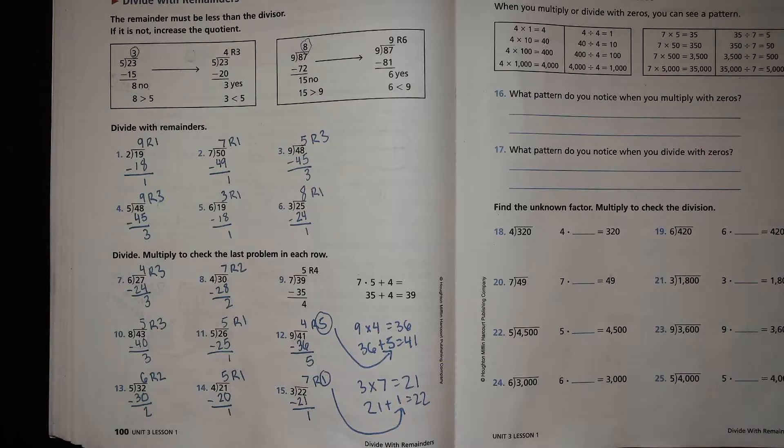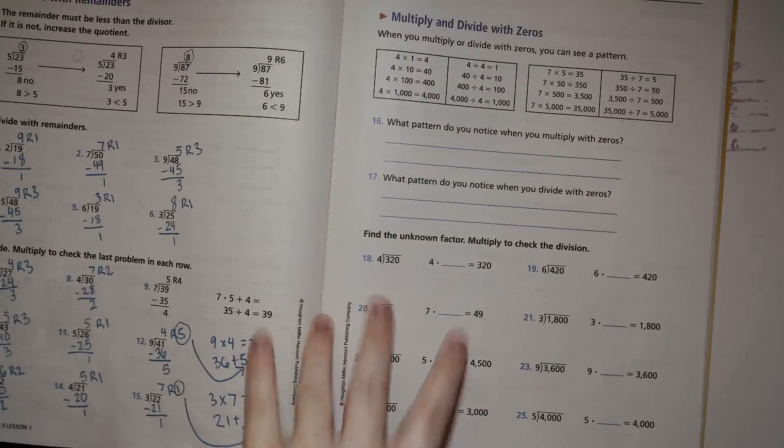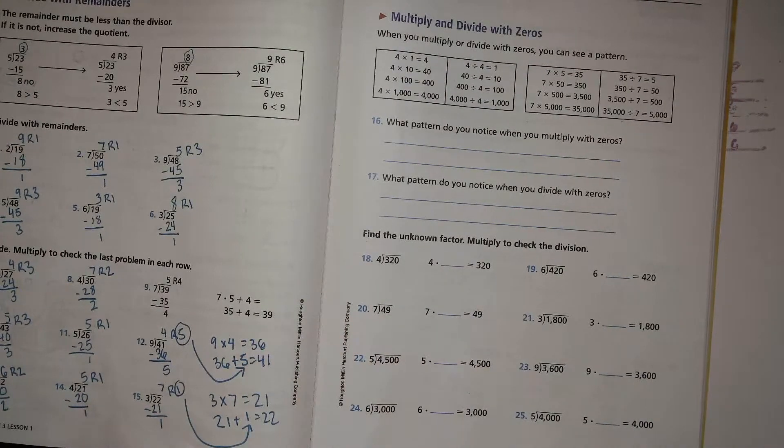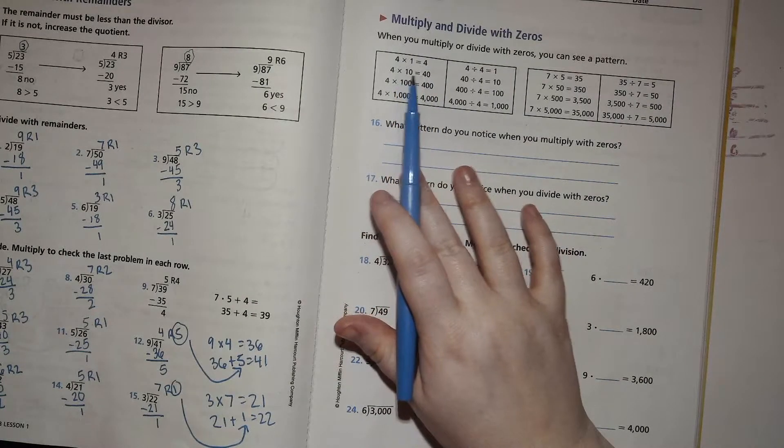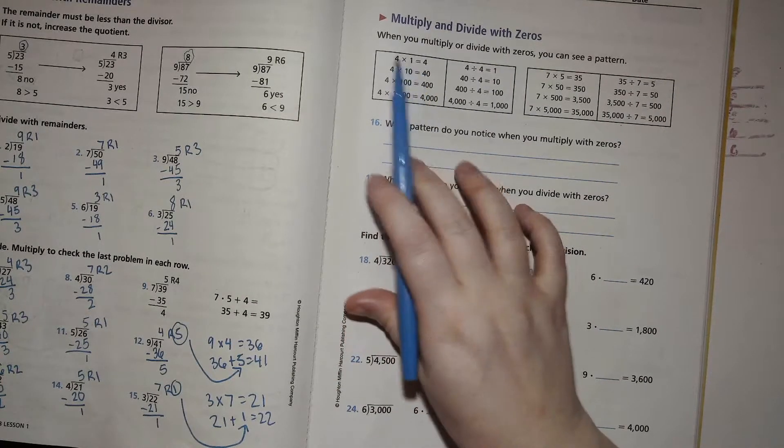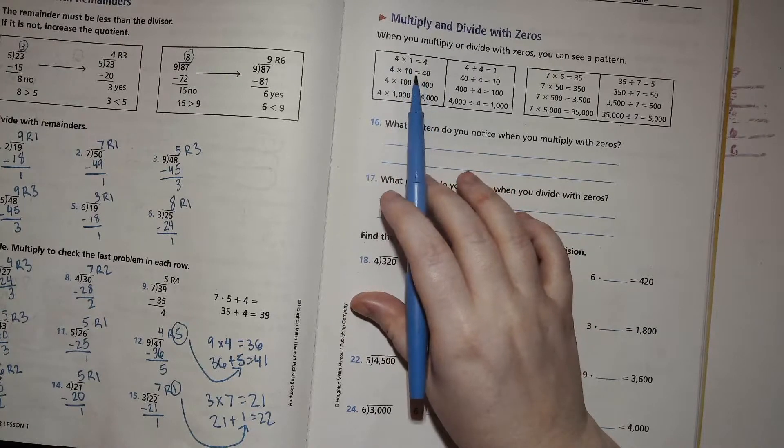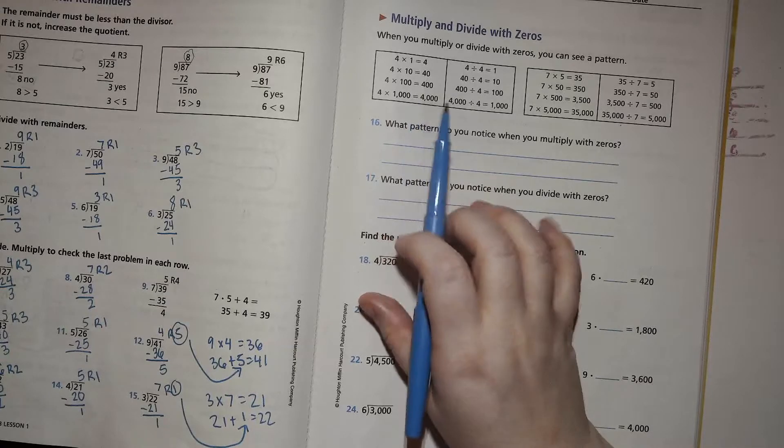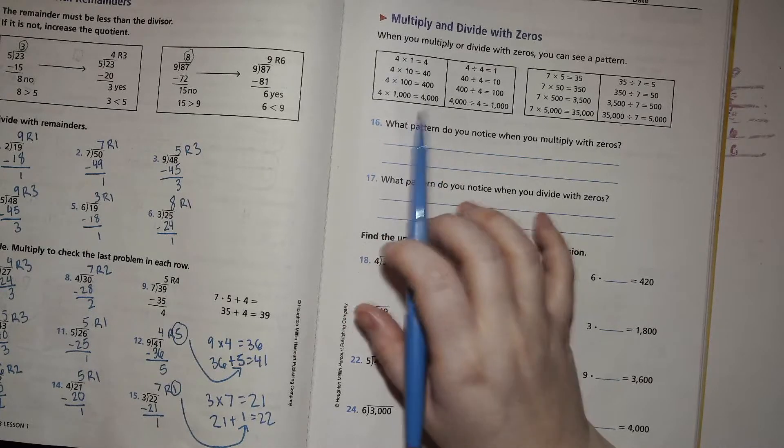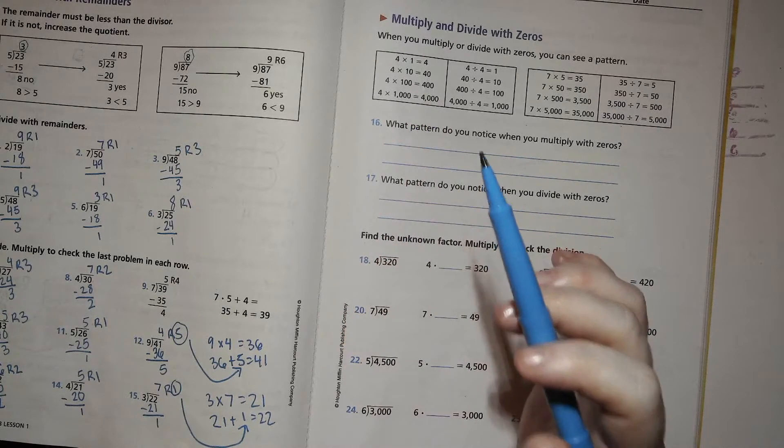So we're going to continue with that. We're going to talk about multiplying and dividing with lots of zeros. We've spent a lot of time learning about place value. And that's really helpful because you can apply your knowledge of multiplying single digit things, even if you're multiplying something that is in the tens, hundreds, or thousands, or beyond place. So that's really neat. Let's take a look. What pattern do you notice when you multiply with zeros?